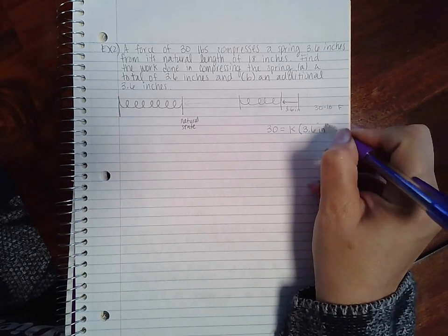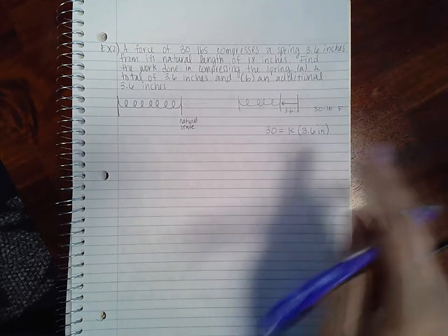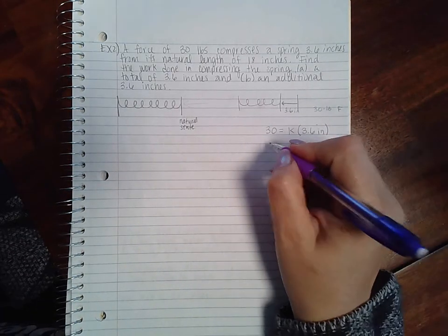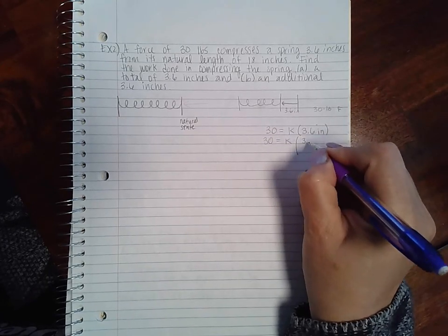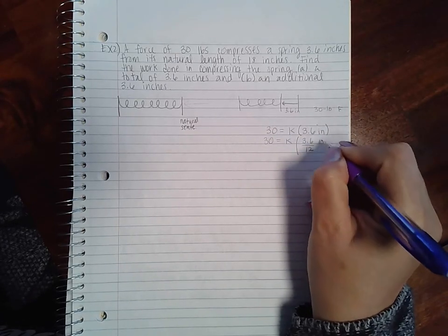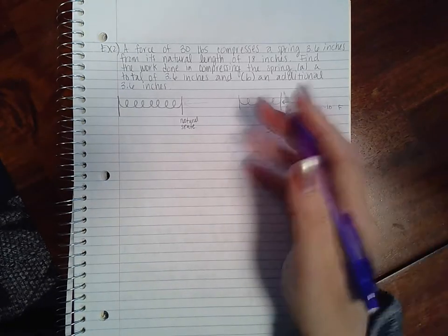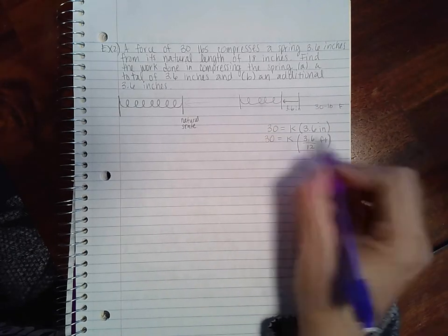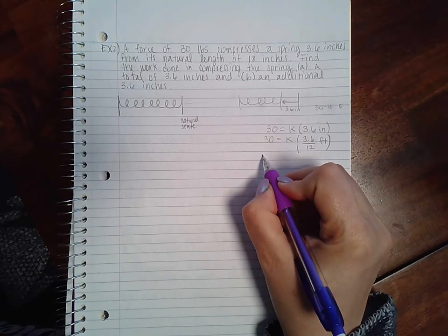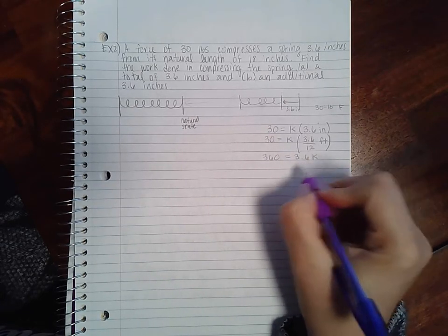But remember what we talked about in the beginning—you usually want it in foot-pounds, not inches. So how do you calculate inches into feet? It would just be 3.6 over 12 feet. So then I have, if I multiply both sides by 12, I get 360 equals 3.6k.